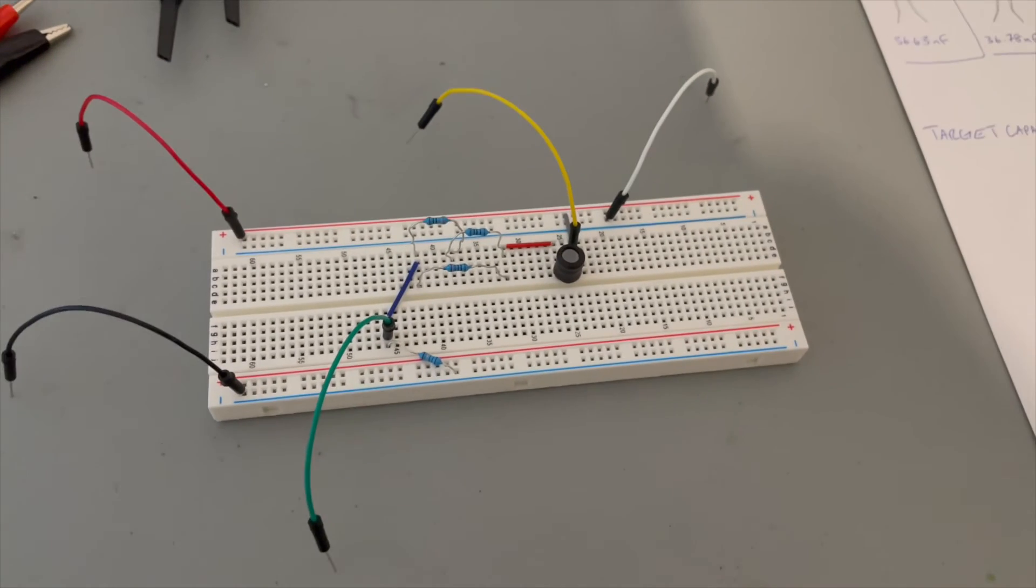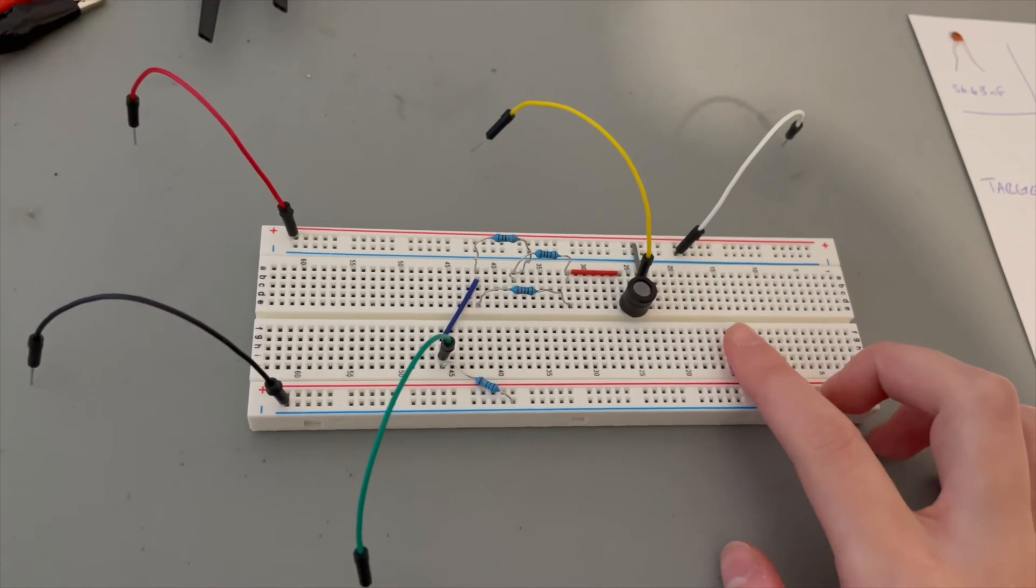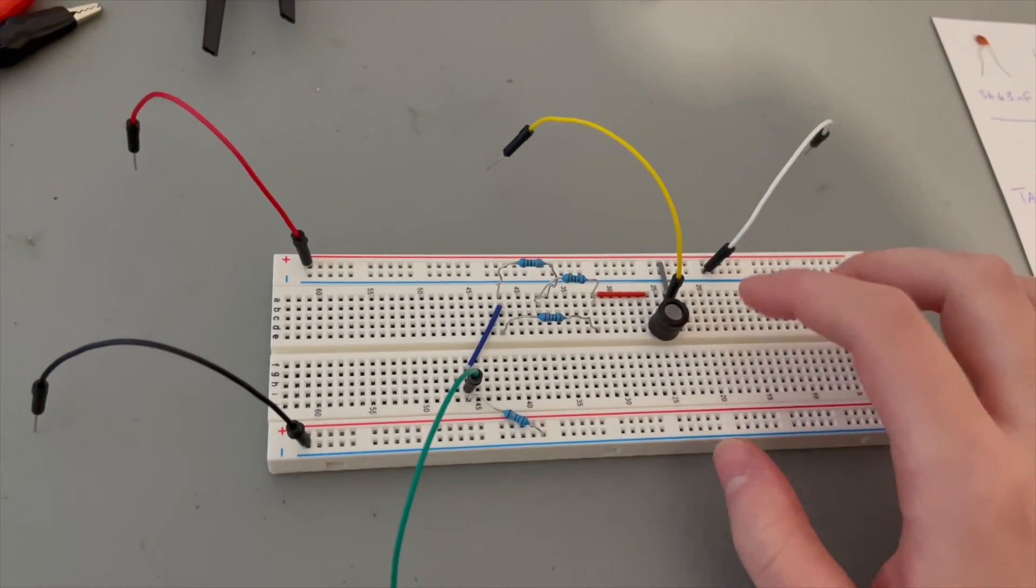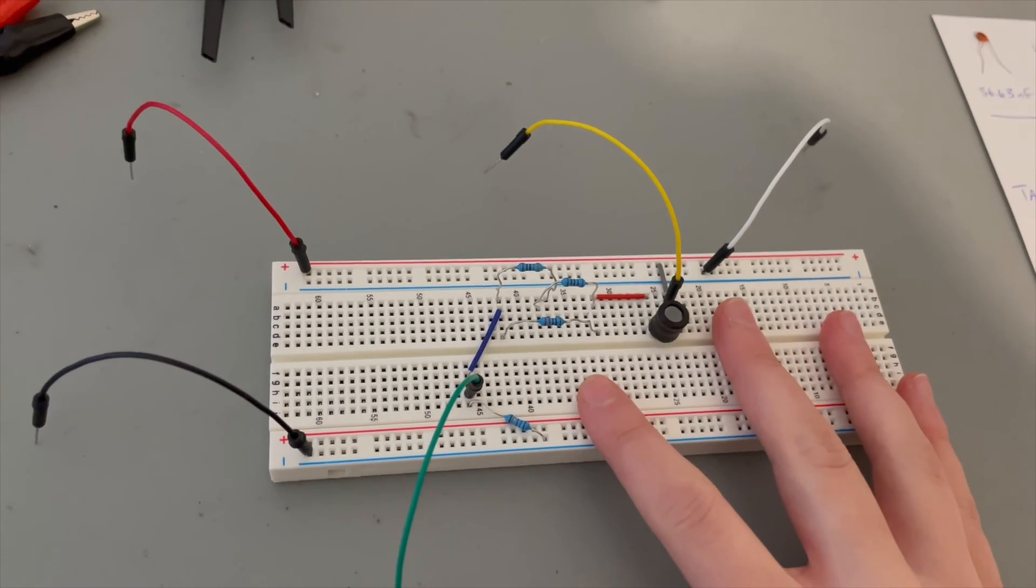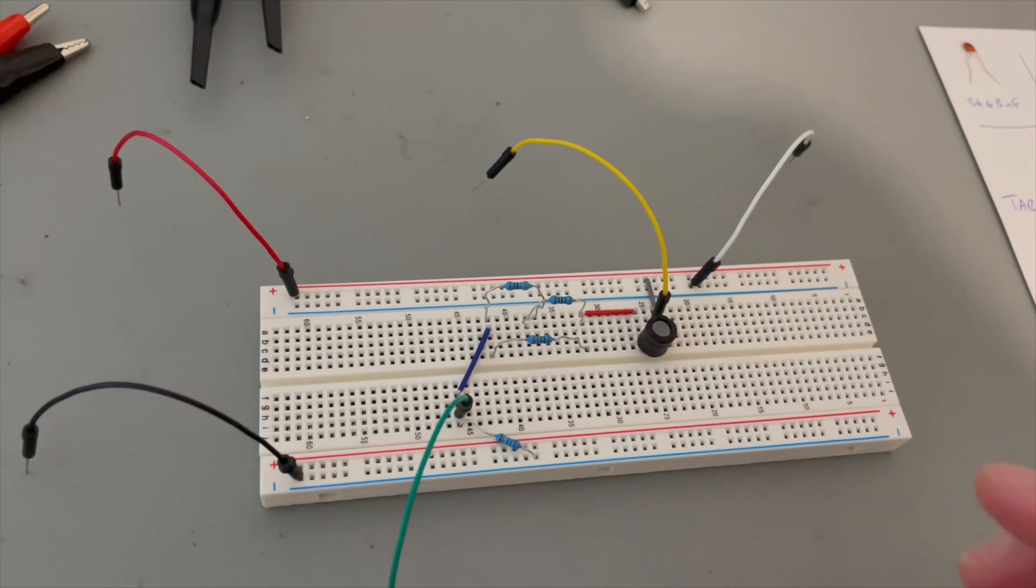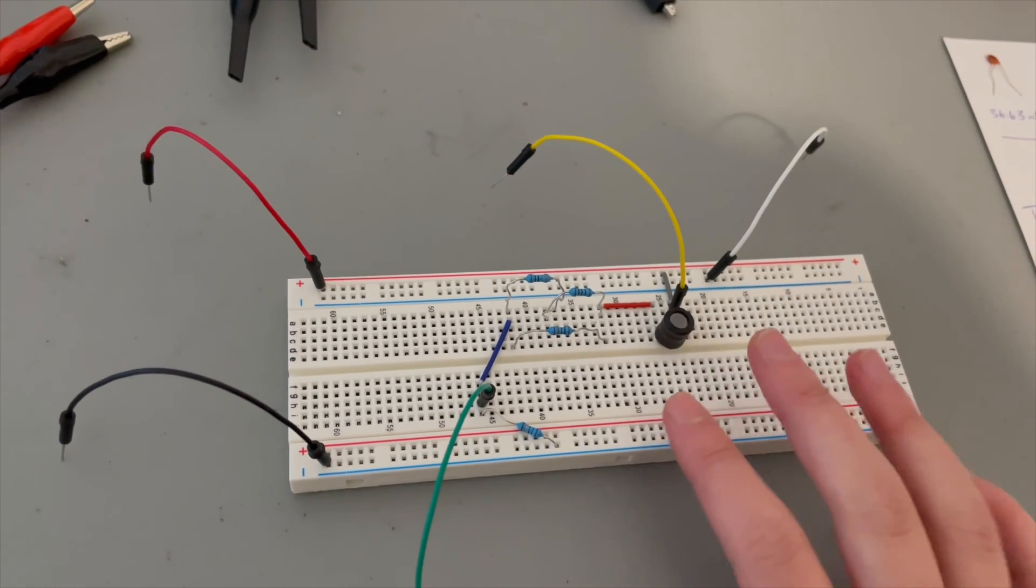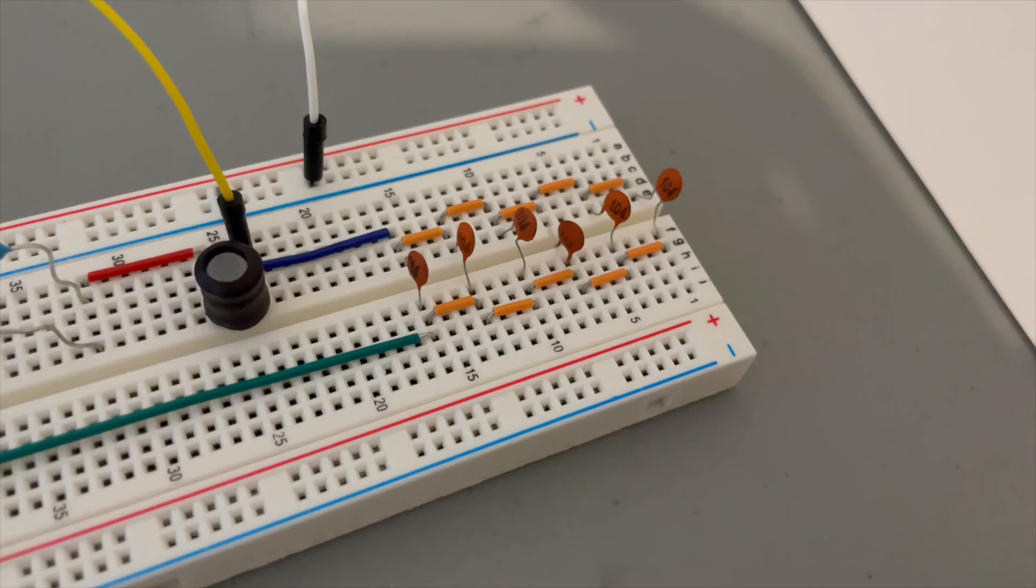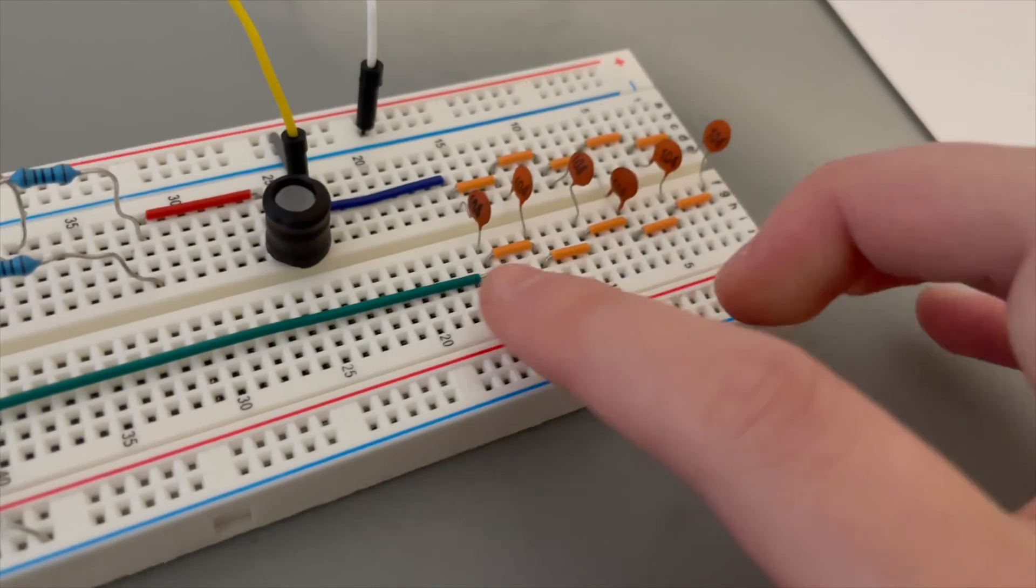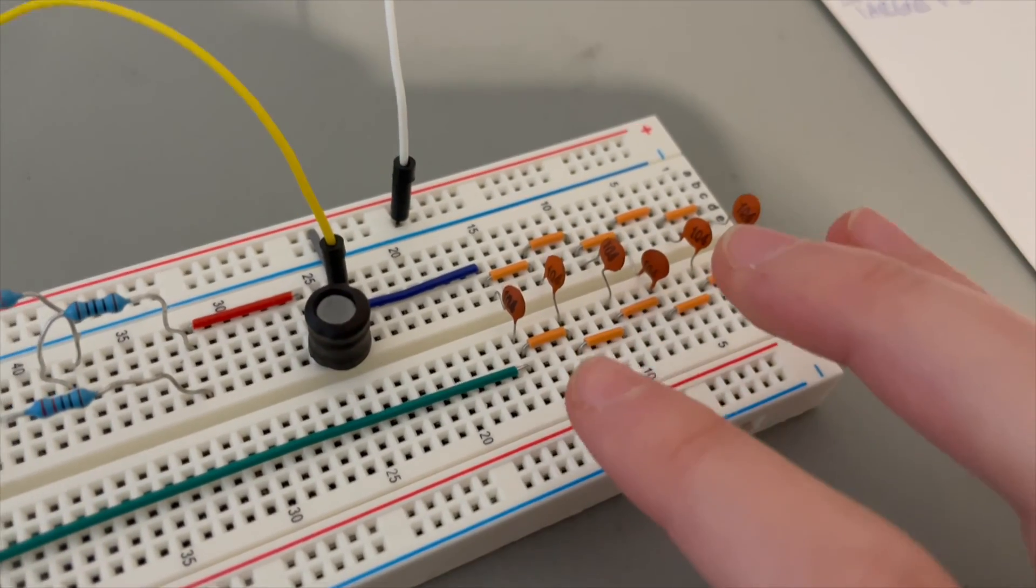As I've mentioned earlier, we needed a 216 nF capacitor in order to fix the power factor of the circuit. However, I don't have a 216 nF capacitor on hand, so what I'm going to do is put six 40 nF capacitors in parallel.